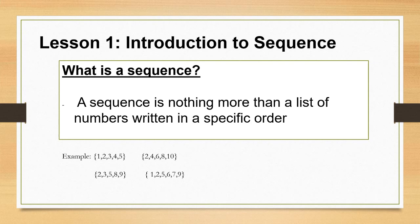Now, for this set of numbers 2, 3, 5, 8, 9 as well as 1, 2, 5, 6, 7, 9 — although they are written in an increasing order, however, if you will observe, they don't have a common difference between the terms. Hence, these two sets are not considered as sequences.